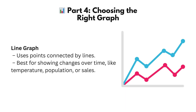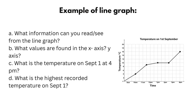Line graph: uses points connected by lines. Best for showing changes over time, like temperature, population, or sales. Look at the example at the right, then answer these questions. A. What information can you read from the line graph? B. What values are found in the x-axis and y-axis? C. What is the temperature on September 1st at 4 p.m.? D. What is the highest recorded temperature on September 1st?